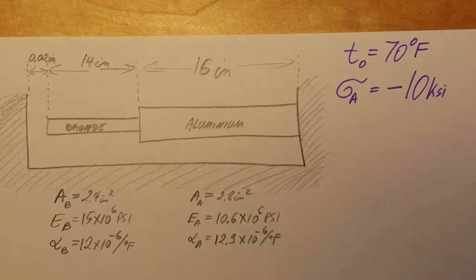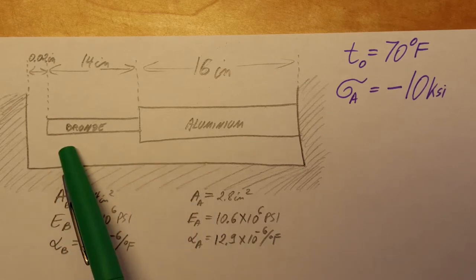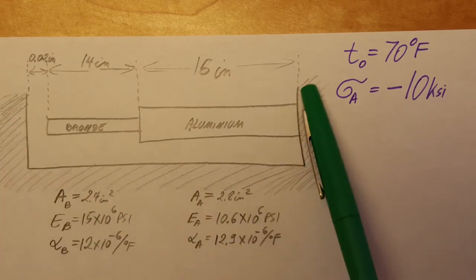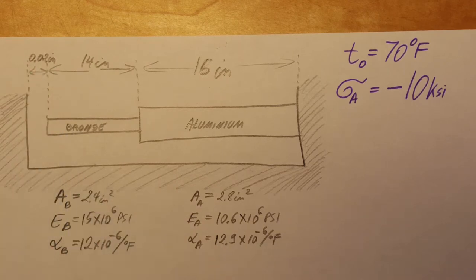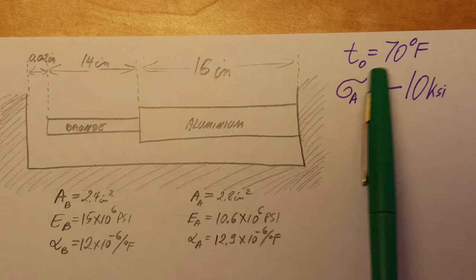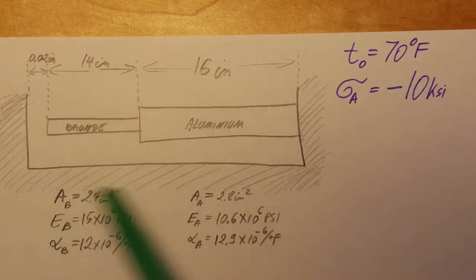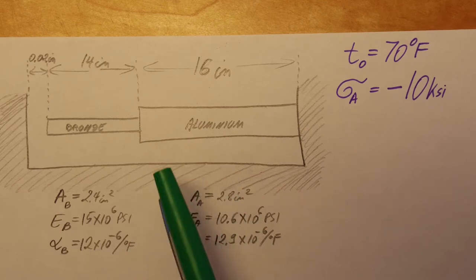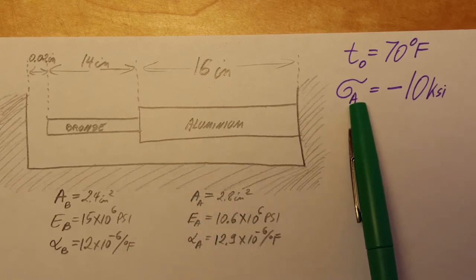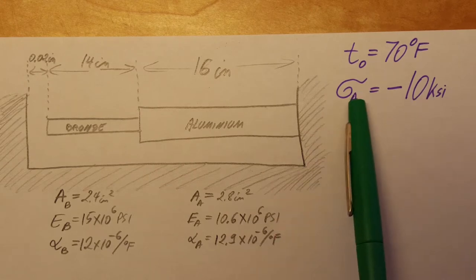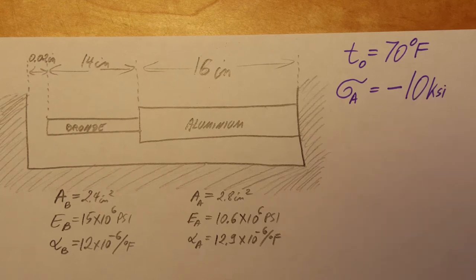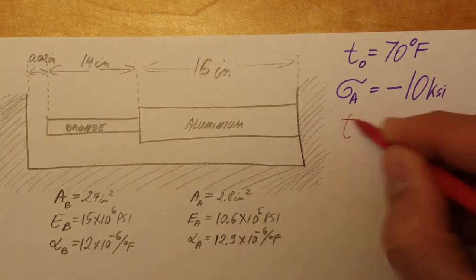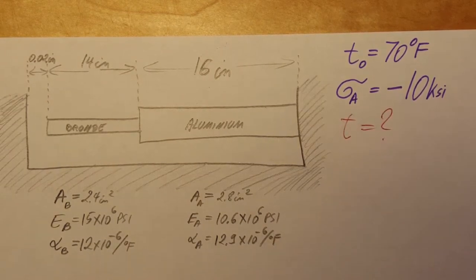This is a strength of materials problem. We have two pieces of metal — one aluminum, one bronze — placed in a holding container. There is a gap of 0.02 inches and the initial temperature is 70°F. We are going to heat this contraption, and in the final stage we will have a normal stress in the aluminum of negative 10 ksi. We need to find the final temperature.